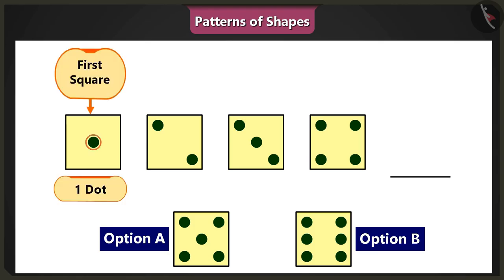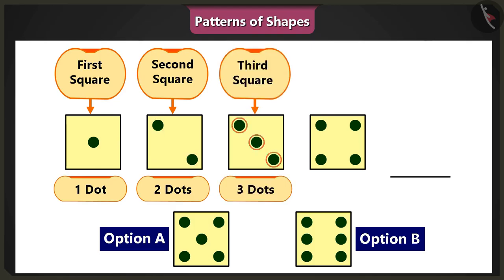Yes. Third square has three and the fourth has four dots. This means that the dots in these squares are in ascending order.